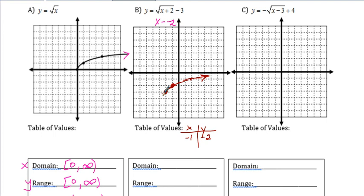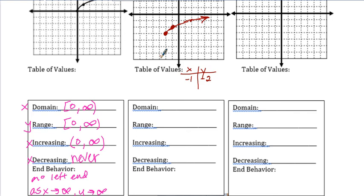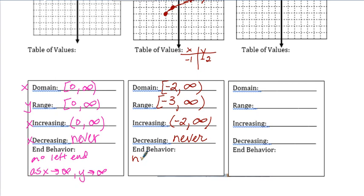The domain of this shifted function starts at negative 2 and goes to infinity. The range starts at y equals negative 3 and goes to infinity. It is increasing from x equals negative 2 to infinity, and never decreasing. End behavior: no left-end behavior, and as x goes to positive infinity, y also goes to positive infinity.